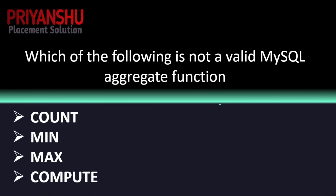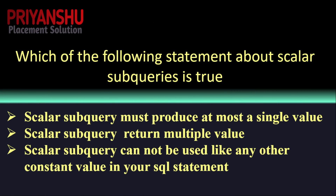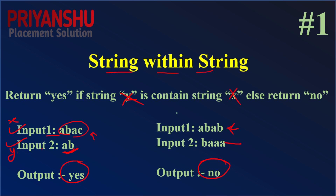The next question: which of the following is not a valid MySQL aggregate function? The answer is COMPUTE. Finally, which of the following statements about a scalar subquery is true? A scalar subquery must produce at most a single value — that is the correct answer.